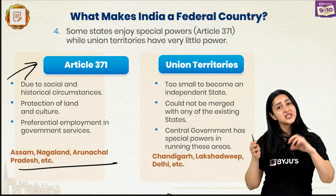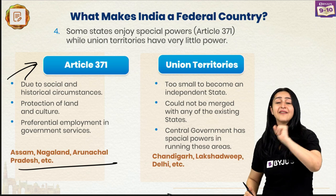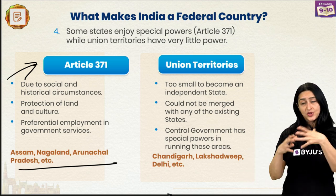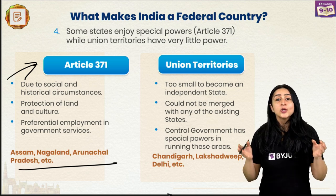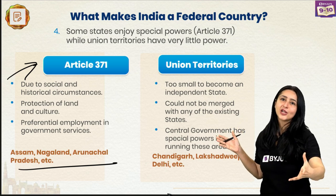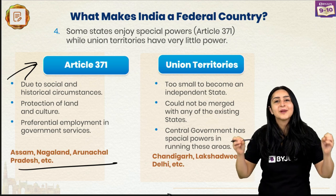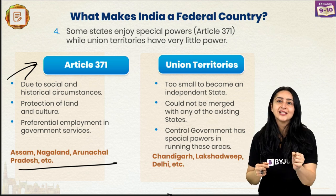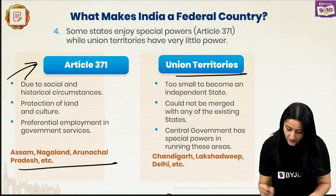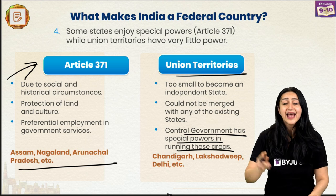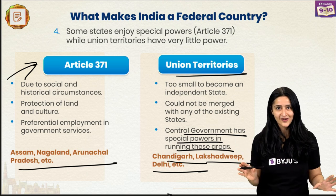On the other hand, India also has Union Territories which have very little power. These are areas too small to be considered a state or granted statehood. While they are socially or culturally distinct, they can't be merged with existing states, so they are called Union Territories and the Central Government directly rules them. Examples of Union Territories include Chandigarh, Lakshadweep, and Delhi.